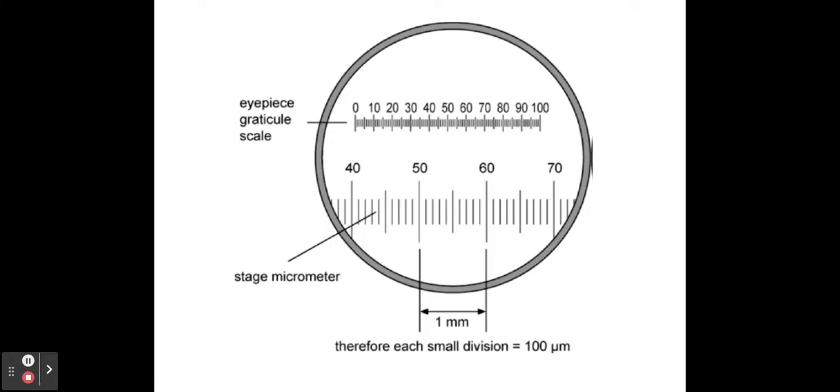Here I have my eyepiece graticule and my stage micrometer. You need to make sure that the eyepiece graticule, so this is the one that is in the eyepiece, the stage micrometer, this is the slide that you've put onto your stage. You've taken the specimen slide off, you put your stage micrometer on.